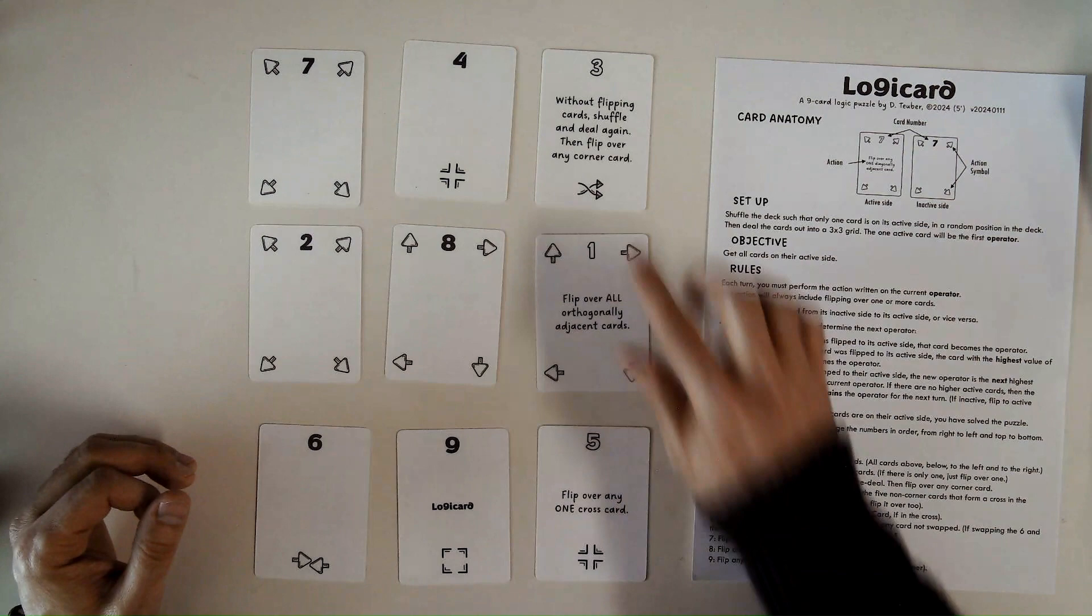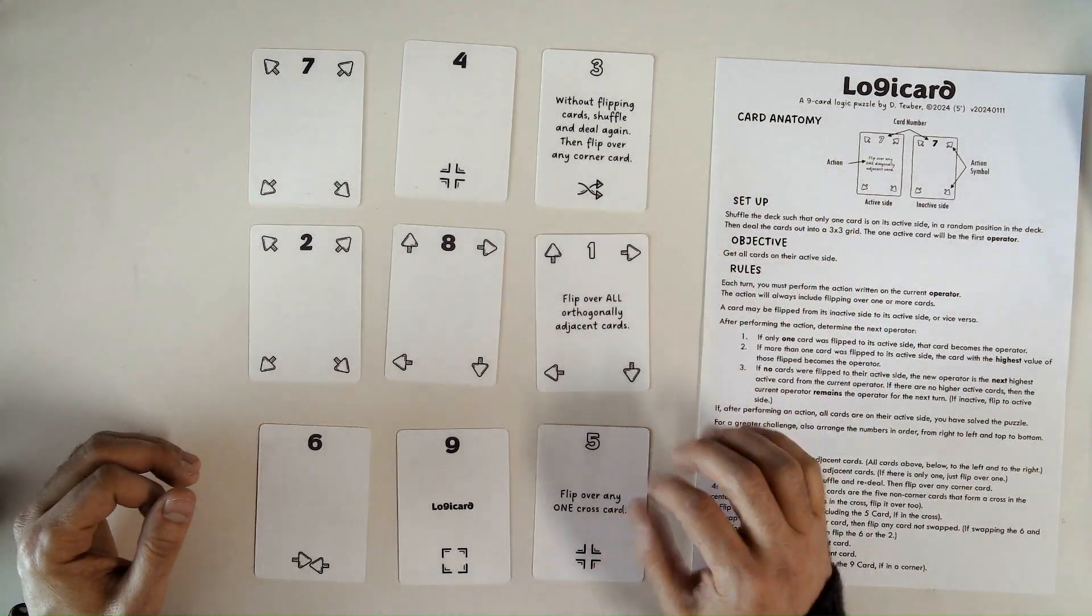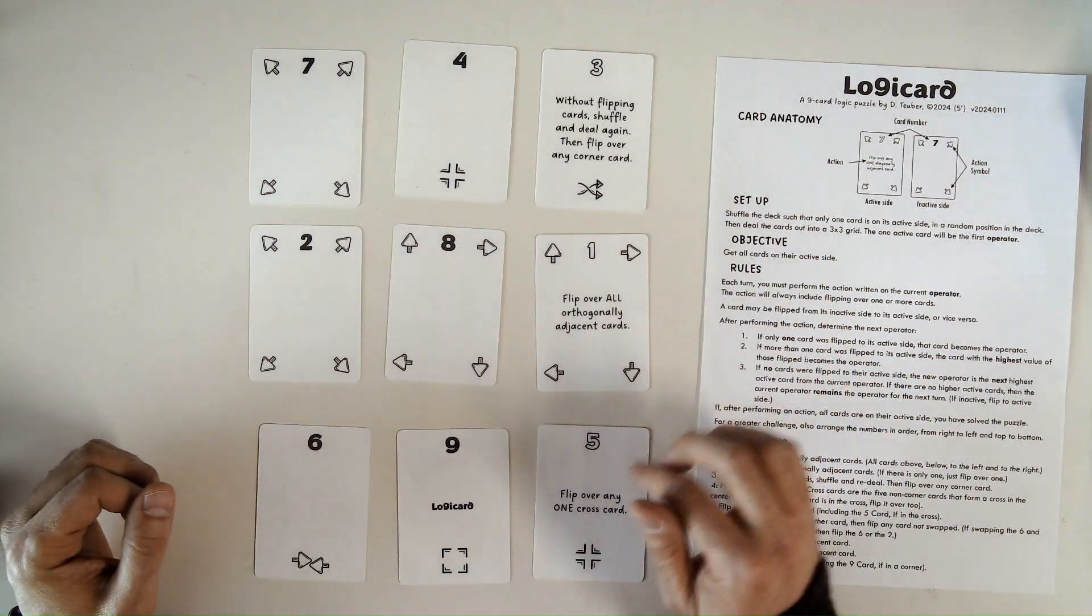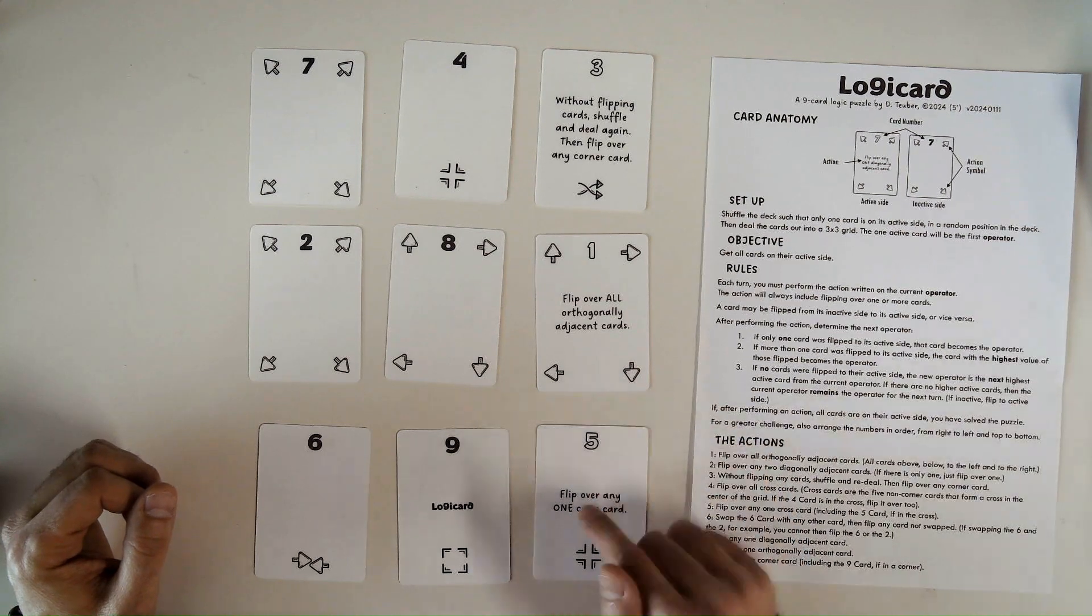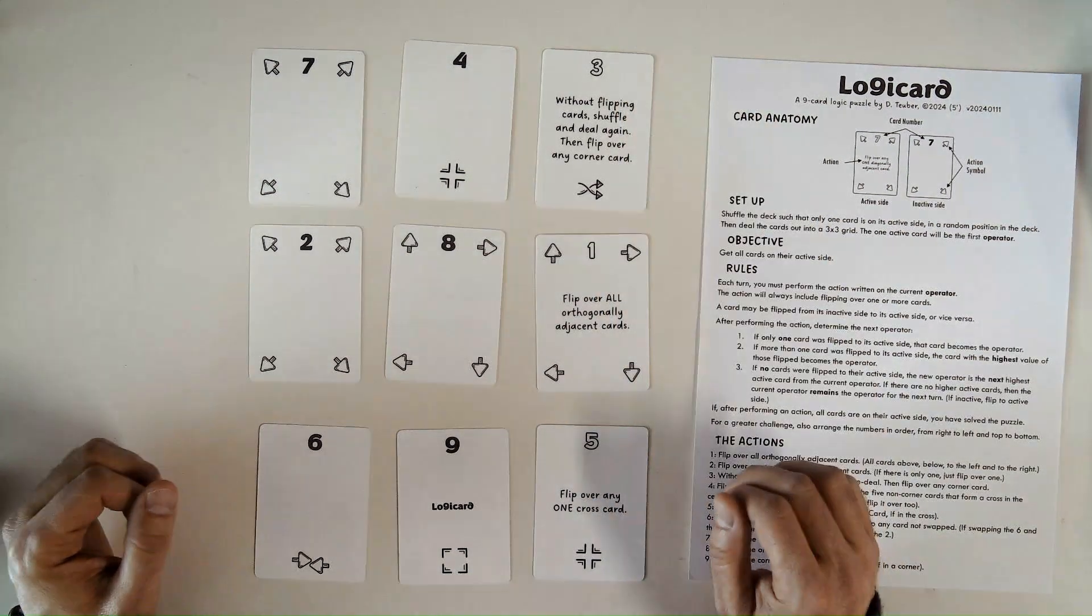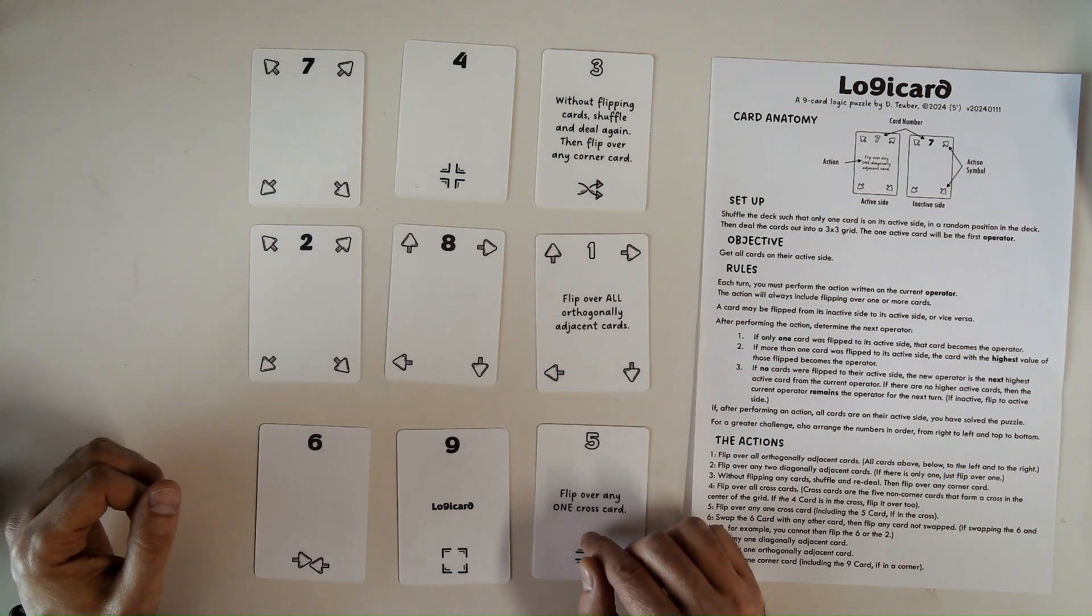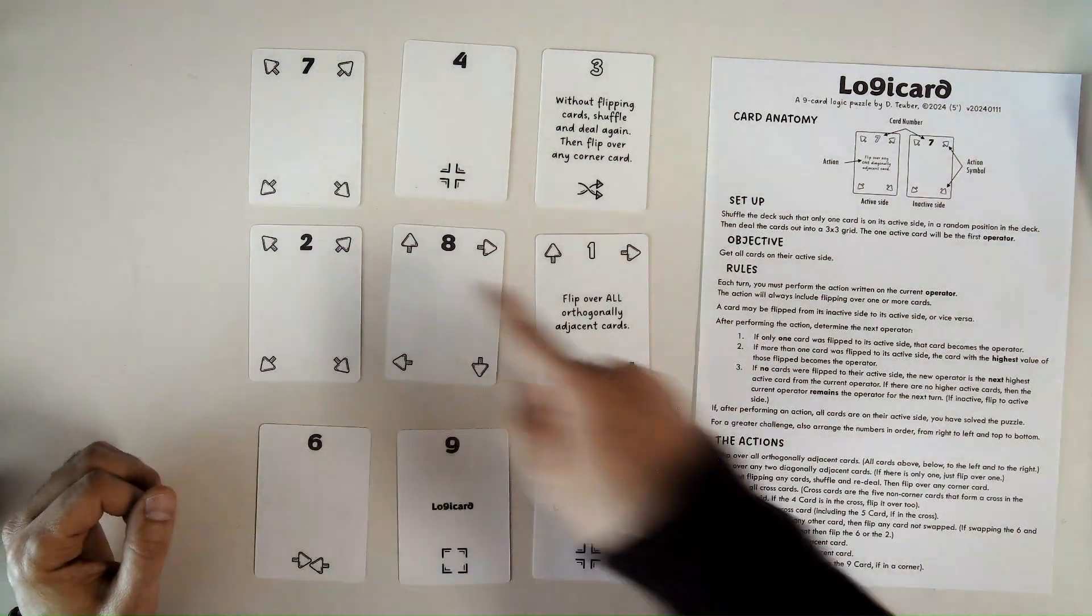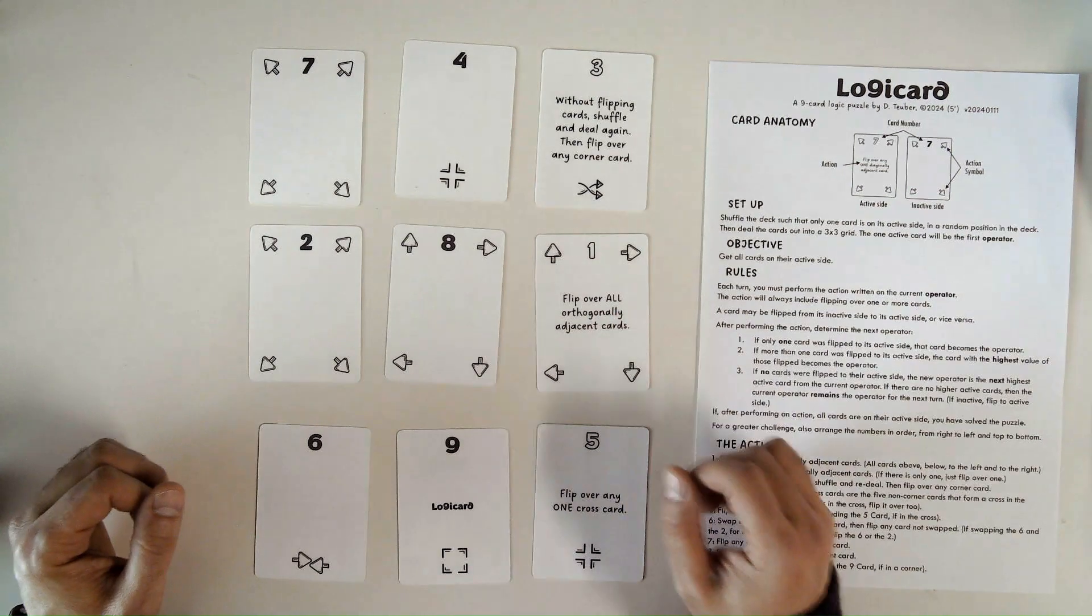Now, this turn, I flipped over two cards to the active side. In this case, to find the next operator, you'll just take the highest of those cards. So I flipped over 2. 5 is the highest. So this is the new operator. I can ignore what's written on the 3. So 5 says to flip over any one cross card. So a cross card is any of these cards that are not the corner that form a cross in the middle of the grid. So I can flip over any one of these.